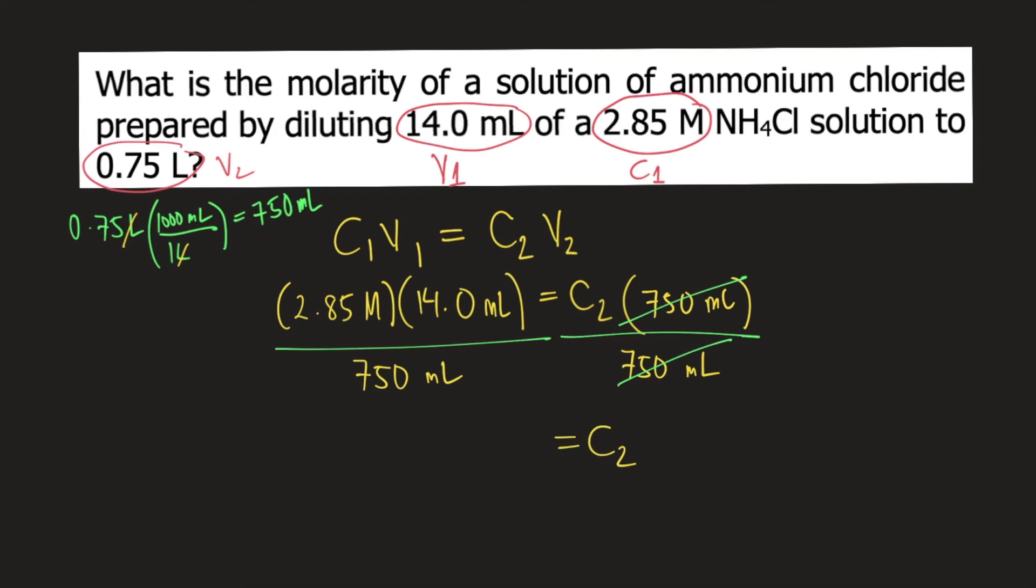On the left side, mL would cancel. So you have 2.85 times 14 divided by 750, which equals 0.0532 molar. This is the answer to the question.